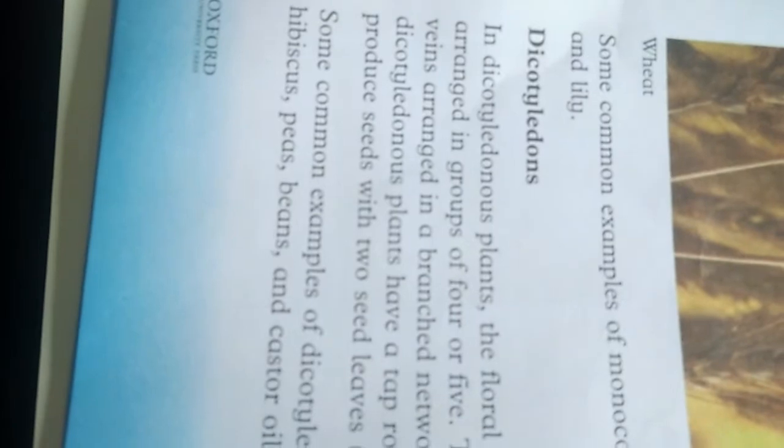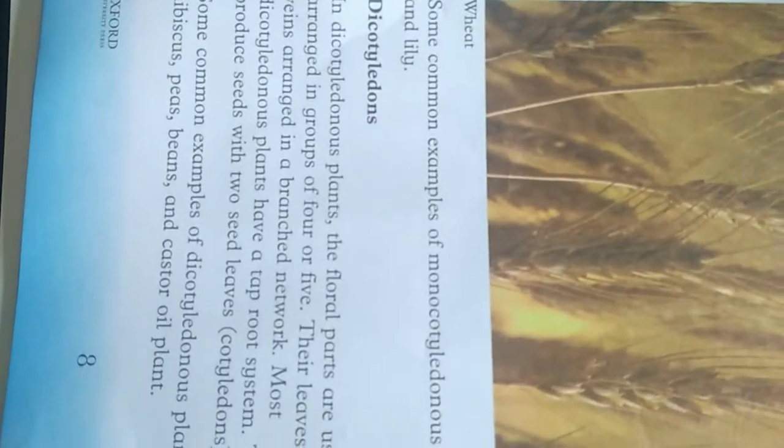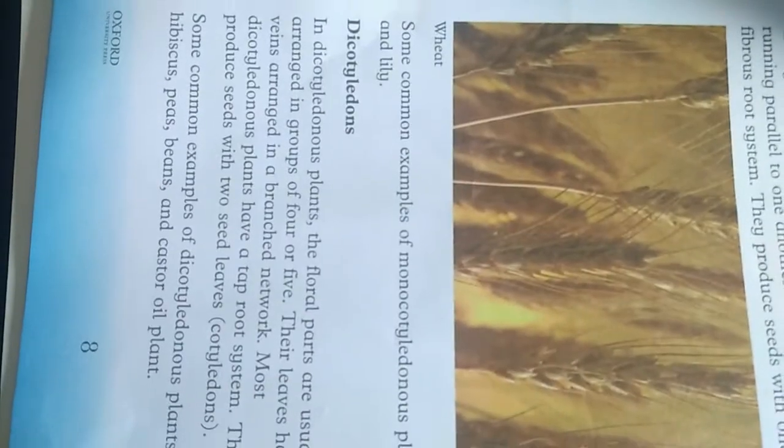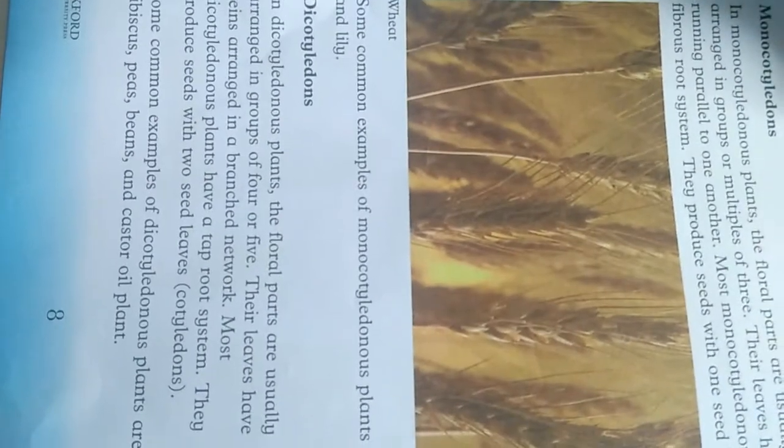Now, dicotyledons. In dicotyledon plants, the floral parts are usually arranged in groups of four or five. The leaves have veins arranged in a branched network. Most dicotyledon plants have a tap root system. They produce seeds with two seed leaves.